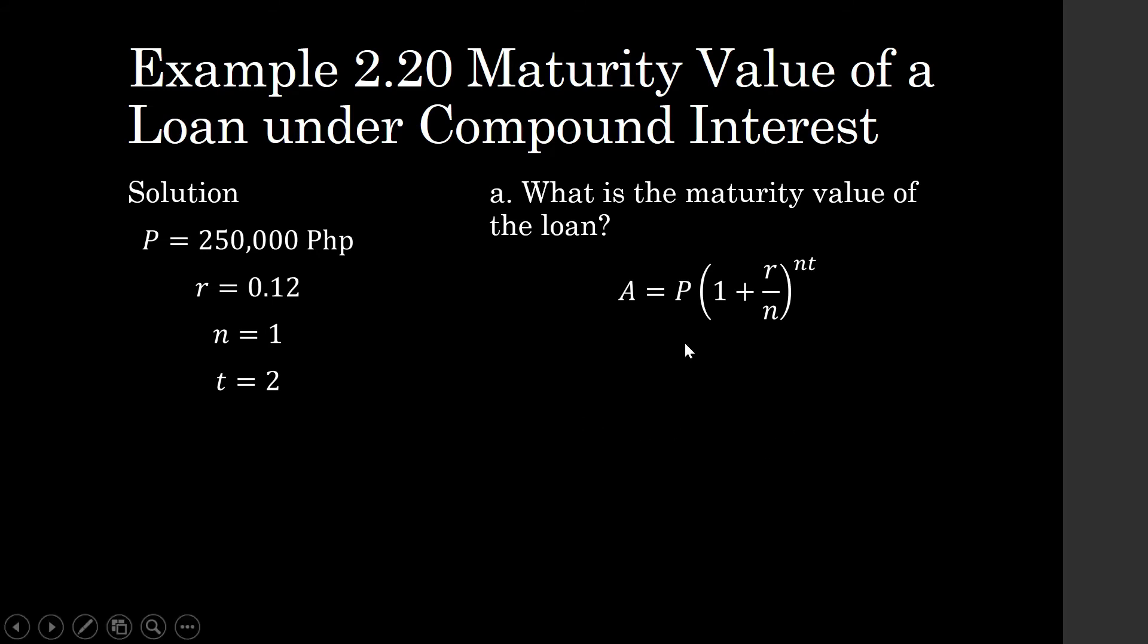Divide and conquer. Here, you compute first for 1 plus R over N. And then, after computing for that, that's when you simplify your expression.